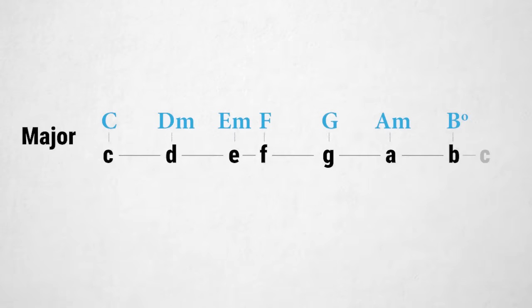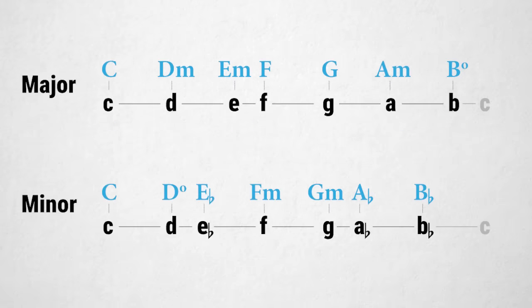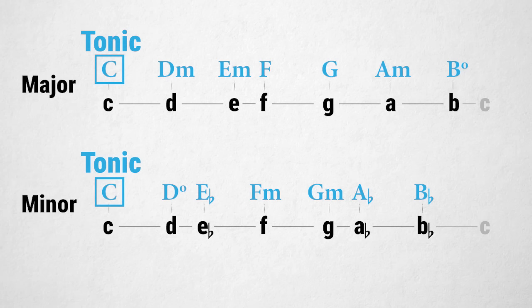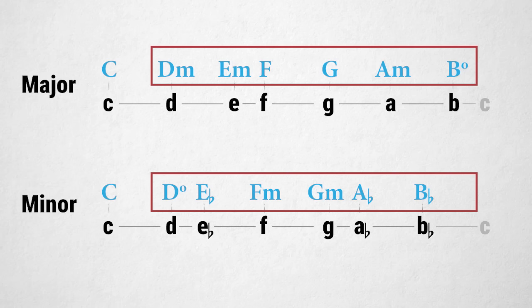In a diatonic scale, we can build a chord on each of the seven notes of the scale. In a major scale we have these chords, and in a minor scale we have these chords. Every musical journey made with such a scale often begins and always ends at the first chord of the scale, which is called the tonic. It sounds and feels like home. Every other chord then the tonic creates tension and is used for getting back to the tonic.